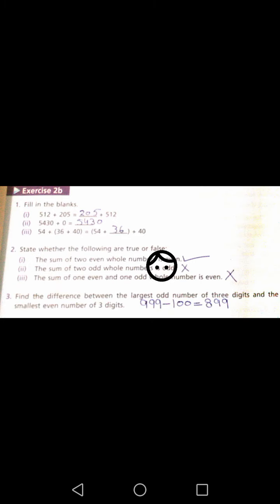State whether the following are true or false. The sum of 2 even numbers is even. If you have 2 even numbers given, then the answer is even. For example, 4 plus 4 which is equal to 8. That is true.